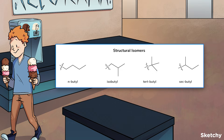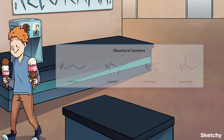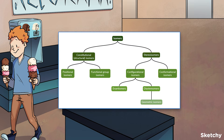Here's an example of some hydrocarbon structural isomers that all have the same formula. Structural isomers can actually be further divided into positional and functional group isomers.